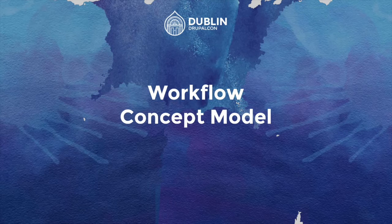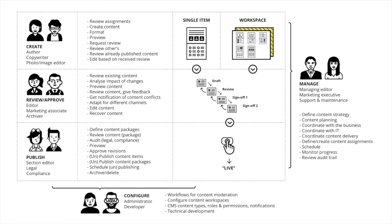As part of the UX sprint we looked at different roles and personas. We came up with a diagram to explain the different roles in play. There's the 'create' role — people who create actual content on your workspace. Then 'review and approve' — people who approve content and move it to the next moderation state. And a 'publisher' role — the person who actually pushes it live, with different permissions for each step.